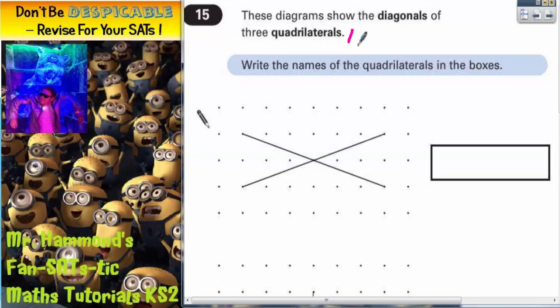Well, quadrilaterals we should remember by now are four-sided shapes, and diagonals are when you join opposite corners within the four-sided shapes. So the easiest thing to do first of all is to actually join up all the corners and see if this helps us.